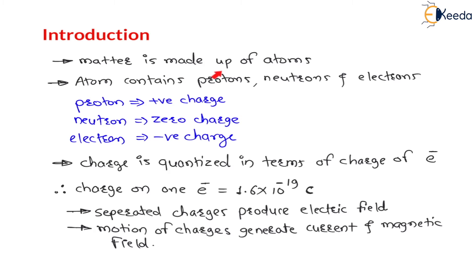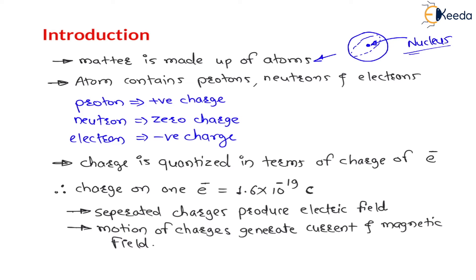Any matter is made with the help of atoms — that everyone knows. All matters are made with the help of atoms and these atoms are generally spherical in shape, like a football. The center of an atom is called the nucleus of that atom. These spherical atoms contain protons, neutrons and electrons.